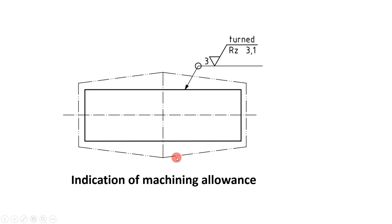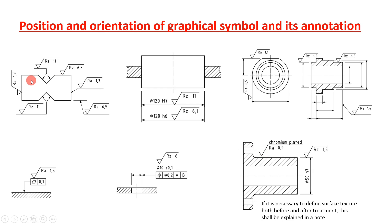On a drawing, the actual shaft size is shown with the surface requirement indicated as a turning operation. An all-around symbol means all surfaces must be machined to the required surface finish. Machining allowance of 3 mm means 3 mm of material will be cut. The different positions and orientations of the graphical symbol and its annotations show how machining symbols are represented on the surface of components, for example on chromium plating.